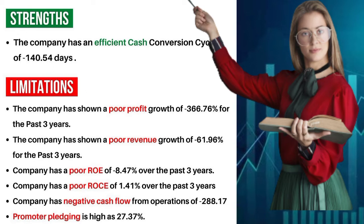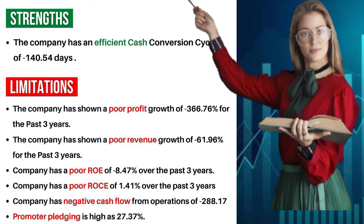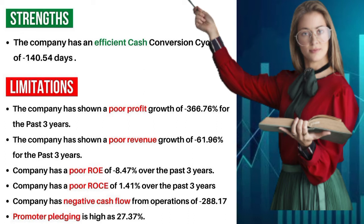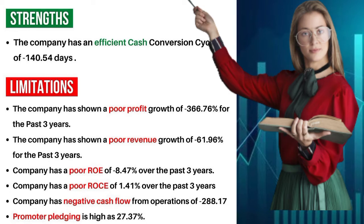Limitations: the company has shown a poor profit growth of minus three hundred and thirty-six point seventy-six percent for the past three years. The company has also shown a poor revenue growth of minus sixty-one point ninety-six percent for the past three years.